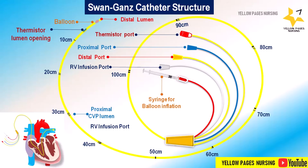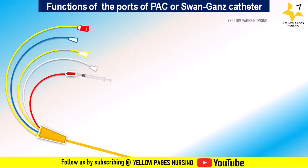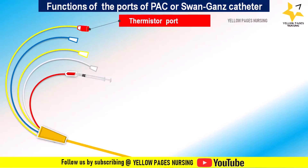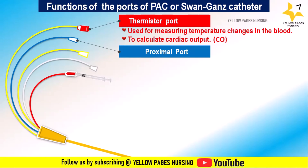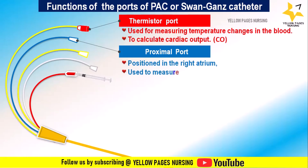Now comes the function of the multiple lumens of the pulmonary artery catheter. The thermistor port is used for measuring temperature changes in the blood, and this information is used to calculate cardiac output.